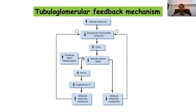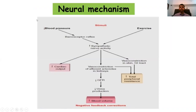This stimulation increases angiotensin II secretion, causing efferent arteriolar vasoconstriction, which raises intraglomerular pressure and tries to increase glomerular filtration rate. At the same time, the stimulation also vasodilates the afferent arterioles, trying to get more blood to flow into the glomerulus. This mechanism helps maintain urine output at times of reduced perfusion due to hypotension.